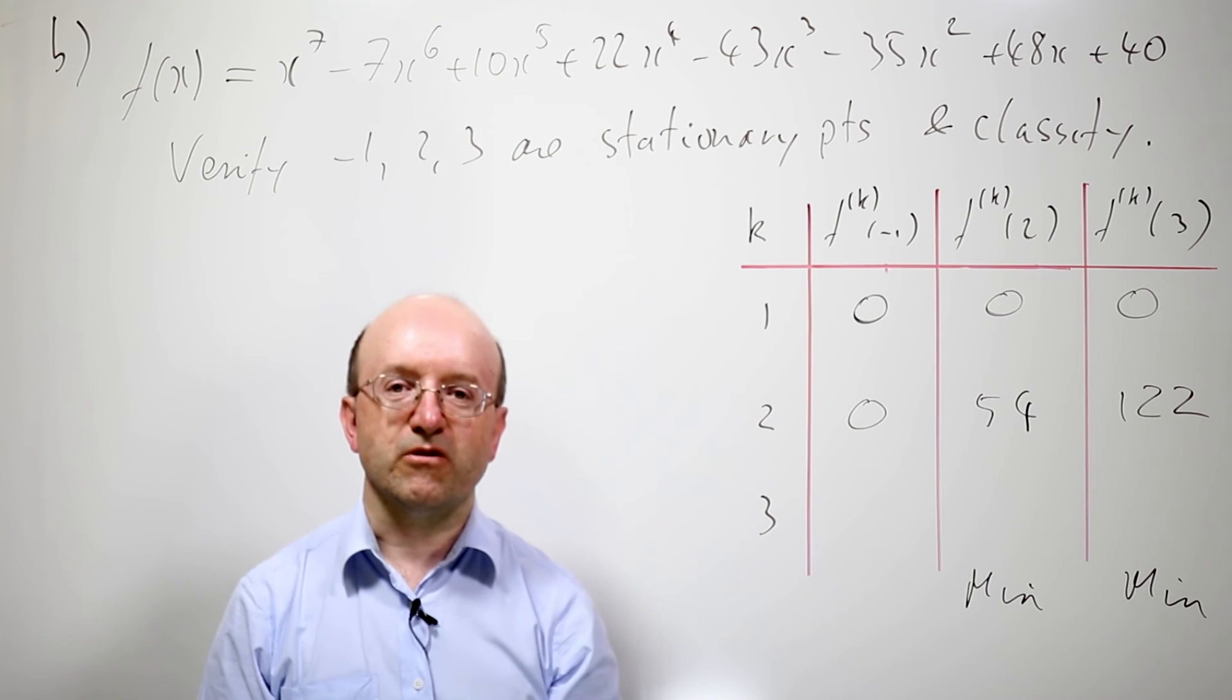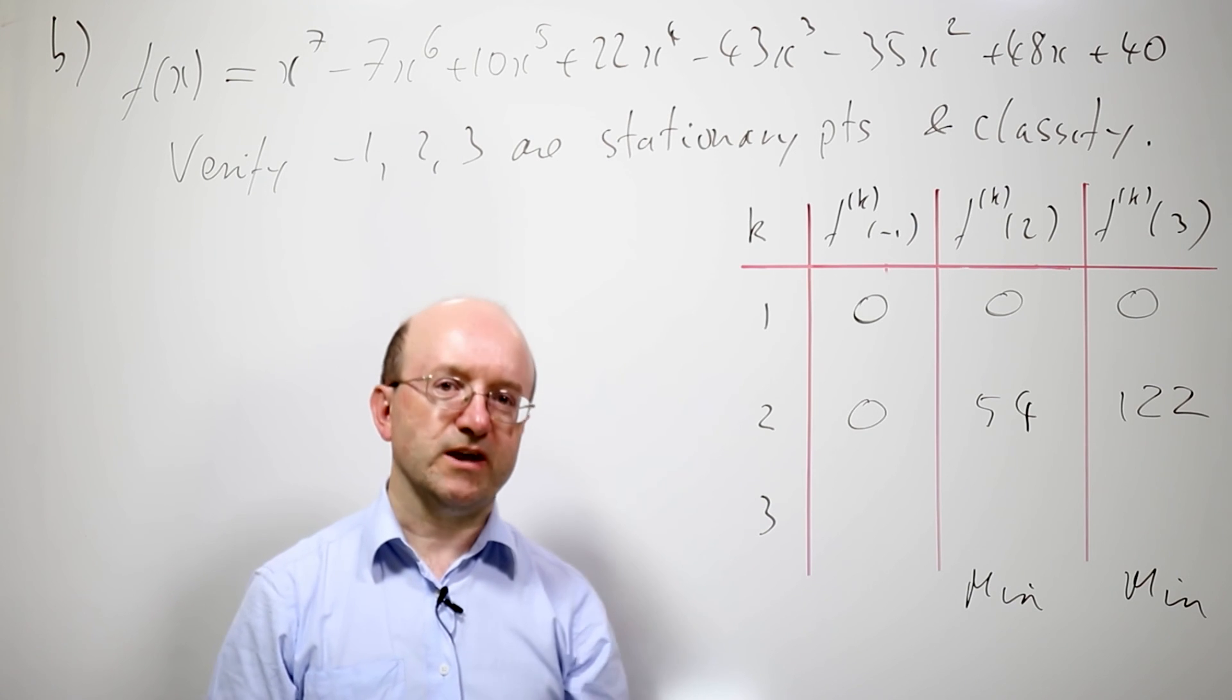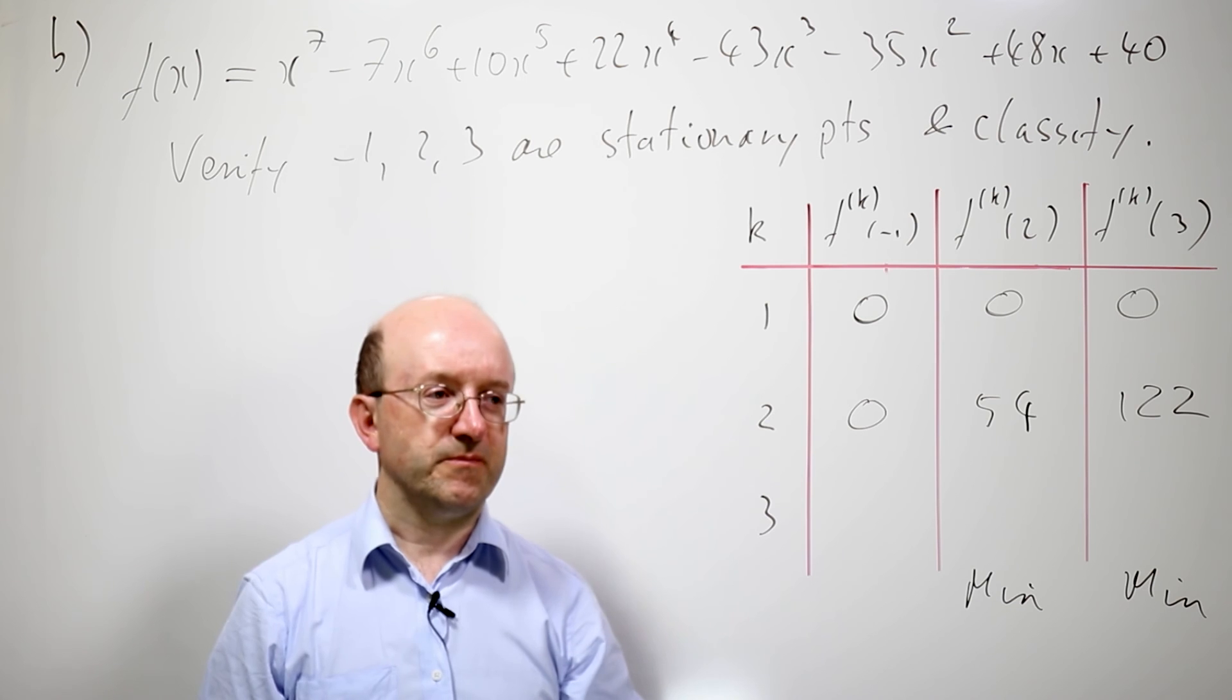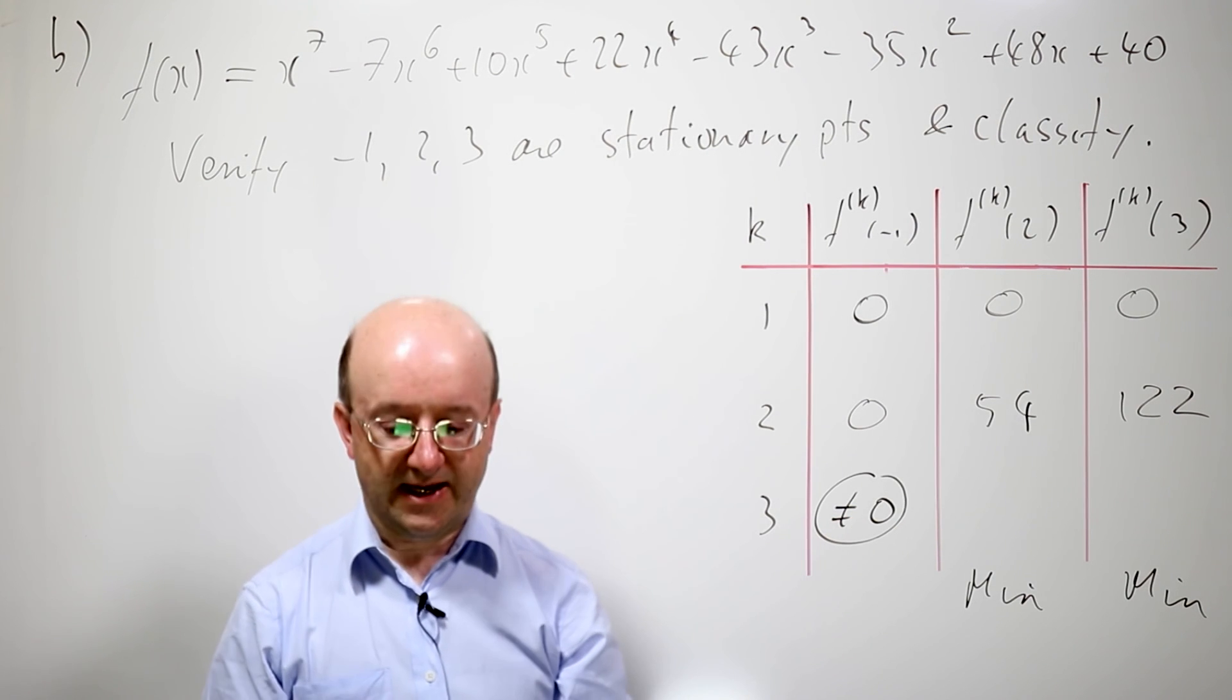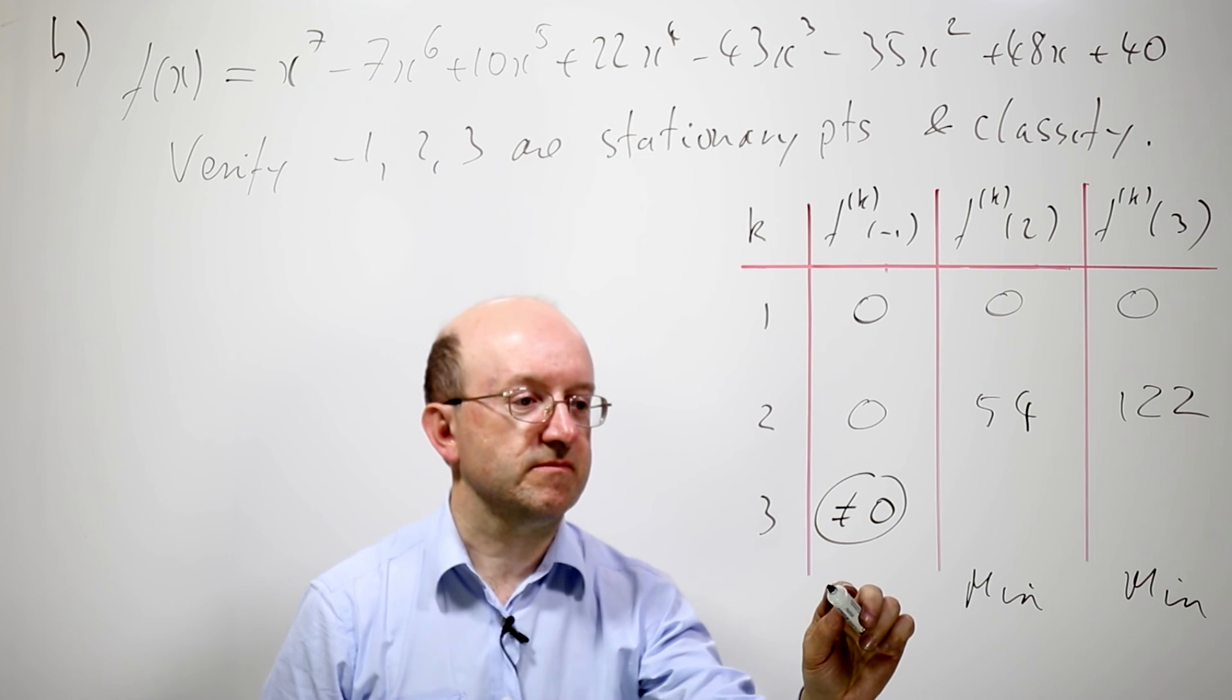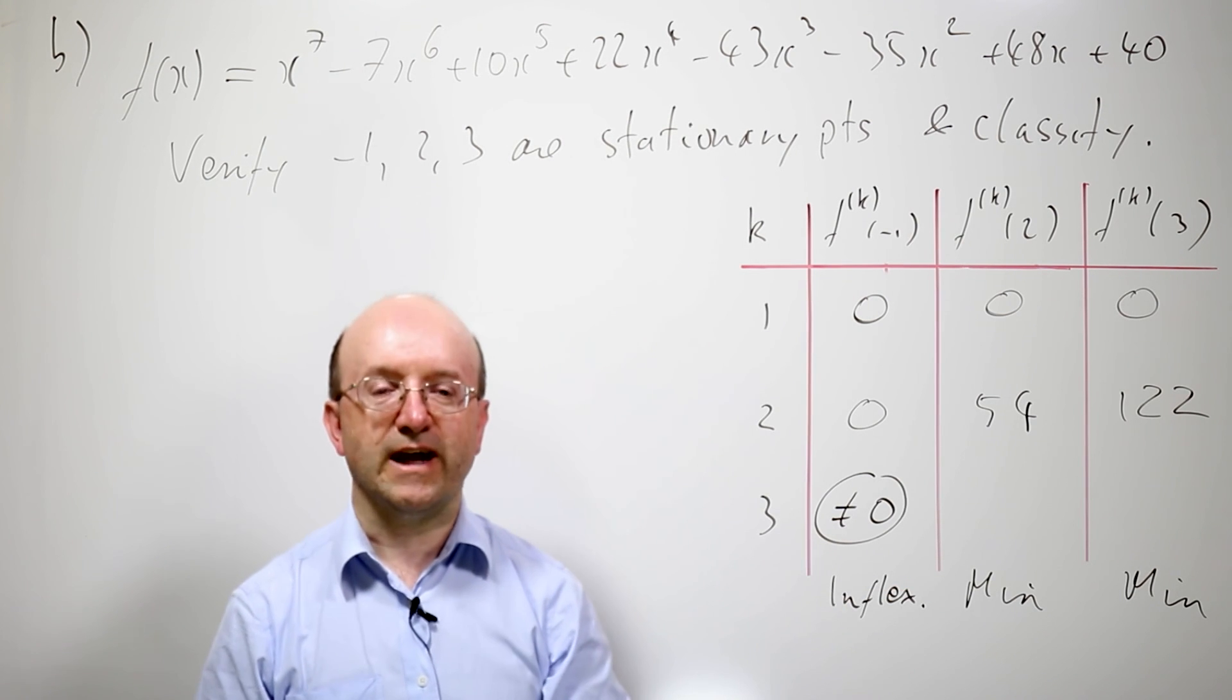All right. But we've still not got round to classifying minus 1. So we have to calculate the next derivative along. Well, when we do that, we find the third derivative, which I mean minus 1. We get something not 0. What the actual value is doesn't actually matter now because not 0 and third derivative tells us we must have an inflection point.